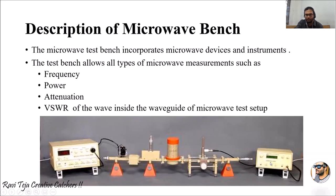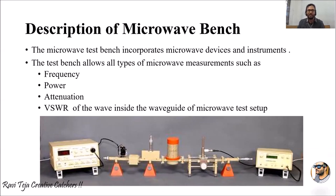The slotted line section is connected to a VSWR meter or CRO using a probe. The other end of the slotted line section connects to a matched termination; if you want to take readings from the load, use a detector mount and connect a CRO probe to it — readings of the waveform can then be taken. This is how a complete microwave bench setup looks and is used, mainly for measurement of frequency, power, attenuation, and voltage standing wave ratio.